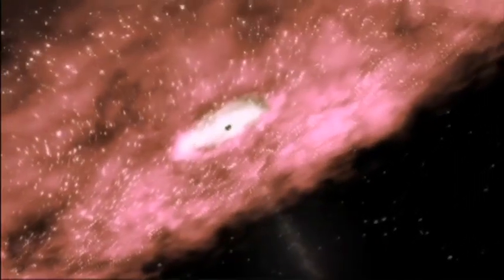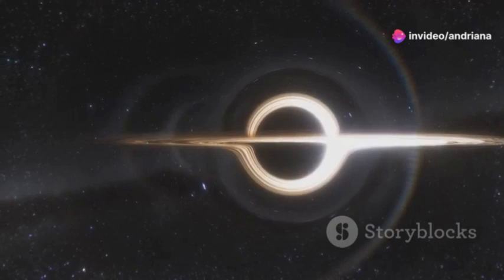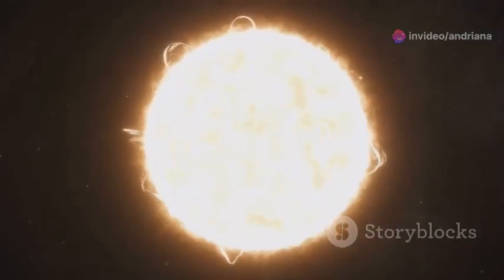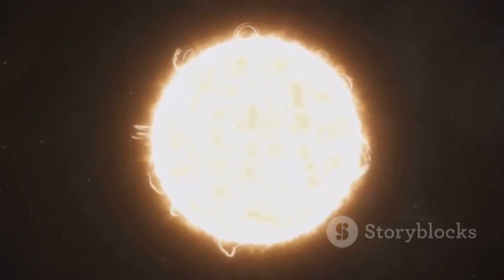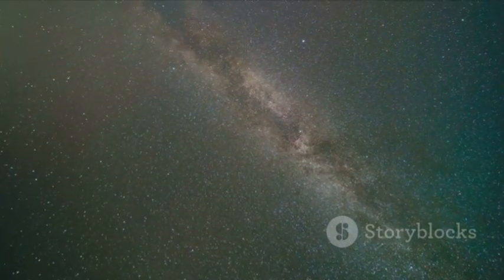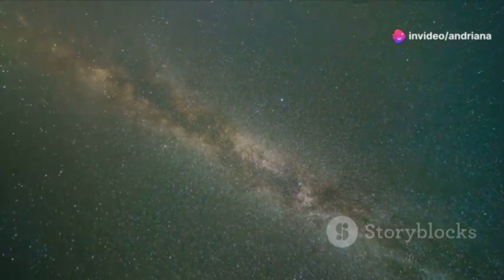The galactic center is home to a supermassive black hole named Sagittarius A asterisk. But luckily, we're far enough away to not get sucked in. Instead, our sun orbits this center at an impressive speed of about 514,000 miles per hour. Yet even at this breakneck speed it takes our solar system about 230 million years to complete a single orbit.